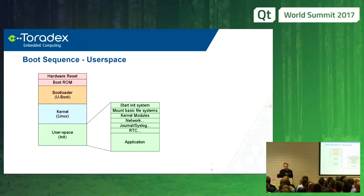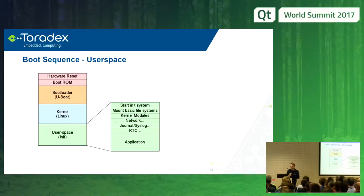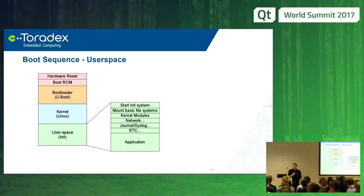The last sequence is user space, which usually takes quite a while. Init systems start all background services. On embedded systems, systemd is often used — but its normal behavior is to start all background services first and only at the end start the application you actually want. For an embedded system, that's kind of the wrong order. You'd want to start the application earlier and then start everything else afterwards.